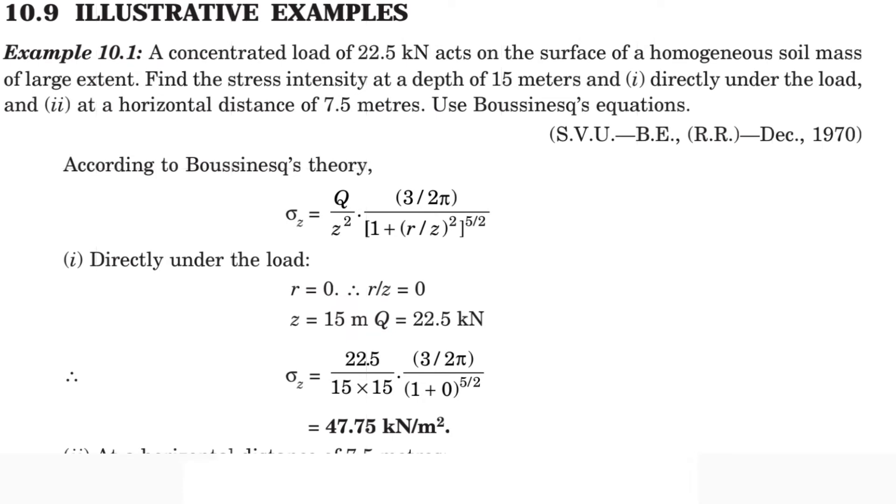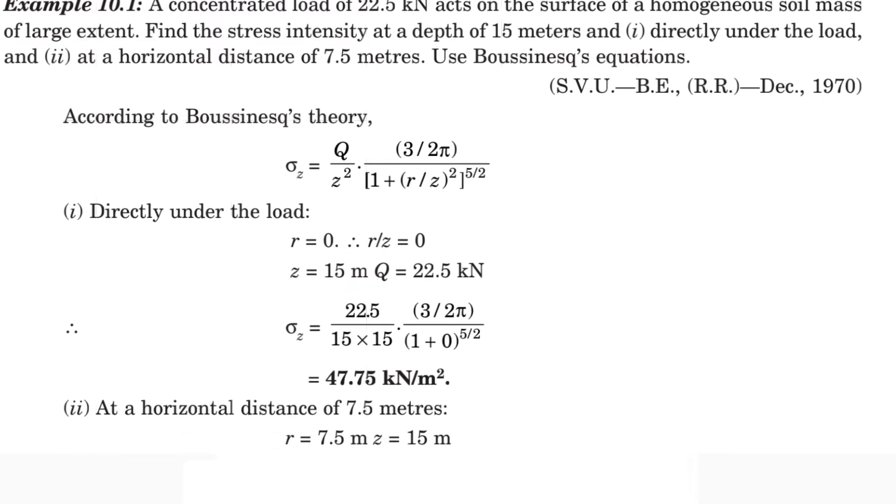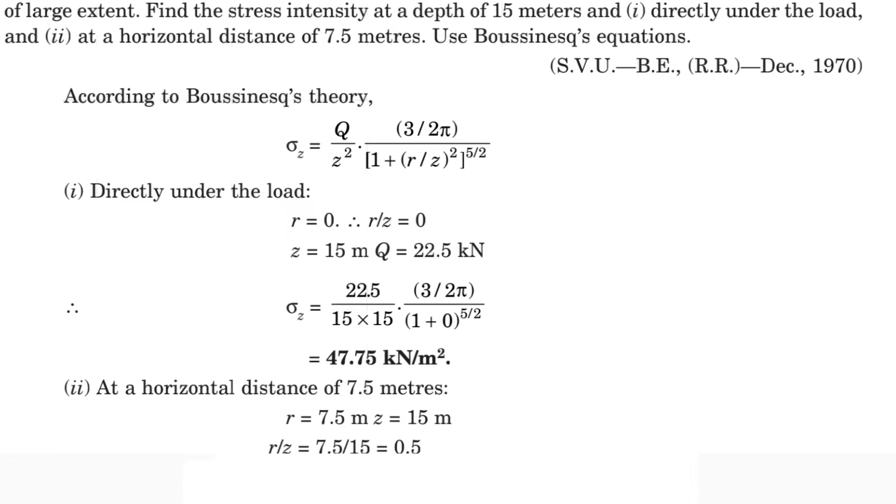For the first question, directly under the load, r equals 0 because directly under the load, so the horizontal distance will be 0. Then r/z equals 0. z equals 15 meters as given, and Q equals 22.5 kN. Now we can substitute all the values.